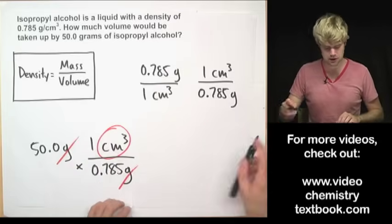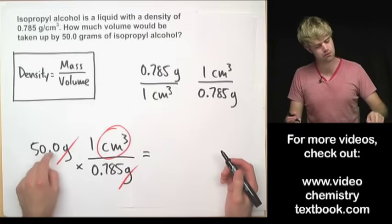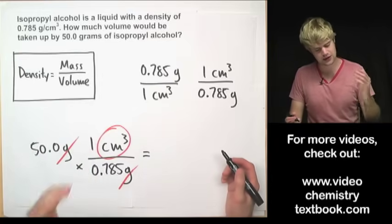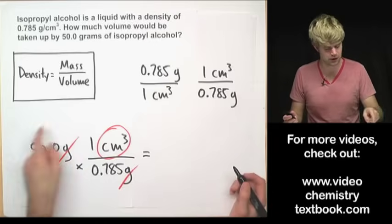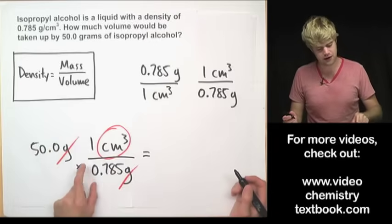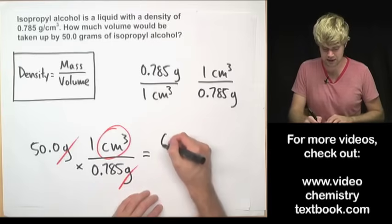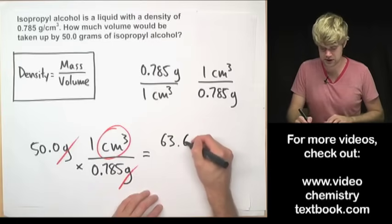I'm going to be left with centimeters cubed and the math that I'll do is 50.0 times one. The answer to that, I mean that's just going to be 50, but so I'm going to do 50 times one divided by 0.785 and I get 63.6943.